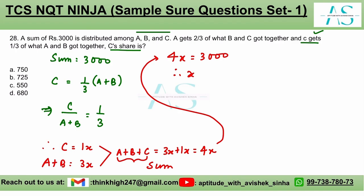Therefore, X is equal to 3000 upon four, which is 750. Now what we need to find? We need to find the share of C. C's share is one X or rupees 750.